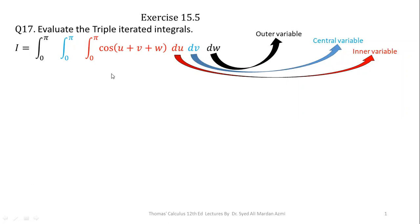In triple integrals, we will always start performing the process of integration with respect to the most inner variable, and then on the outcomes of that integration, we will apply rules of integration with respect to the central variable. Then, after calculating the integral with respect to the central variable, we will apply the rules of integration with respect to the outer variable. So it is an iterative process: inner, central, and outer. We will always follow this order.